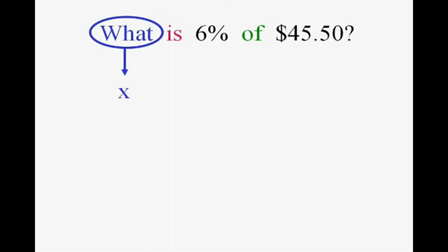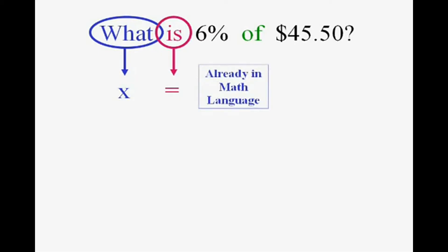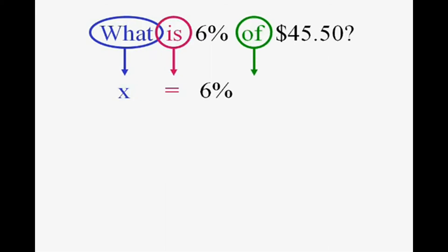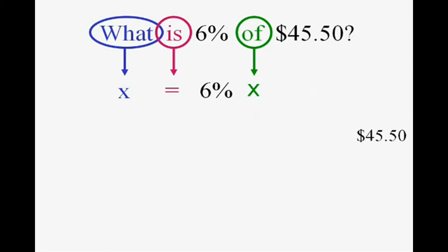I told you any question word interprets to x. 'Is' becomes equals. Now, 'six percent' is already in math language, so we just write six percent. 'Of' is times. And 'forty-five fifty' is already a number. So you've got your equation — it's pretty easy. We just went word for word.